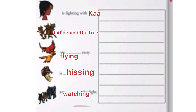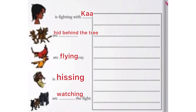Next, the birds are flying away. Then Ka is hissing. Last one: the other animals are watching the fight.